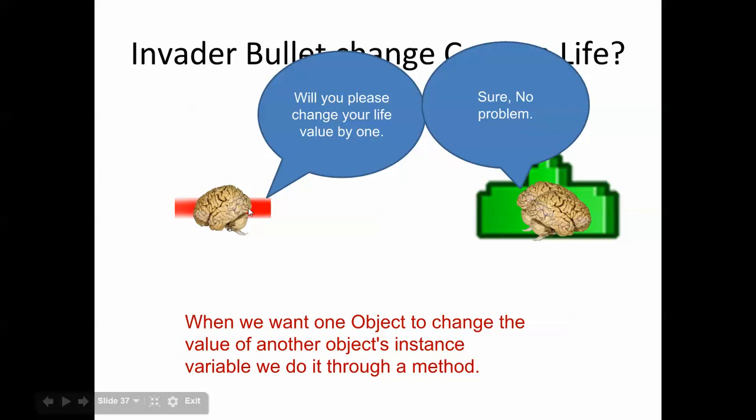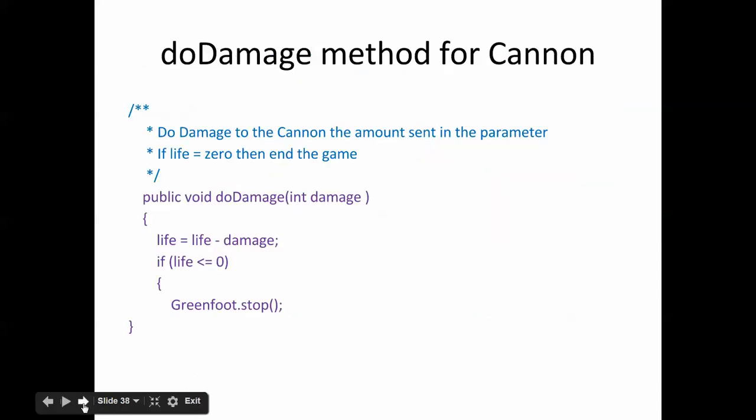So instead of this guy trying to automatically go in and change this guy's instance variables, he actually has to ask. And when we want one object to change the value of another object's instance variable, we do it through a method. So this guy asks this guy through a method to do it. Okay, and we already looked at this yesterday, but I wanted to explore it further.